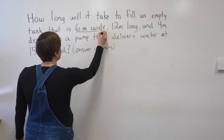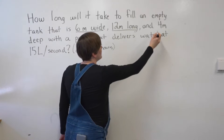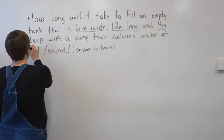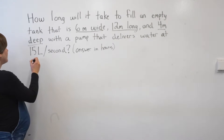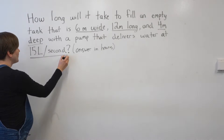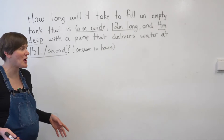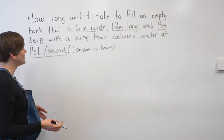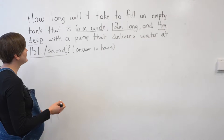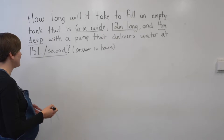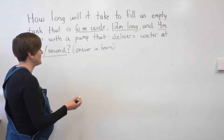So we know that our tank is 6 meters wide, 12 meters long, 4 meters deep, and then we're filling it at a flow rate of 15 liters per second. I like to do math problems by drawing it out — it helps me better understand what it's asking. So we've got a tank with a width, a length, and a depth, so that sounds like a rectangular tank to me.